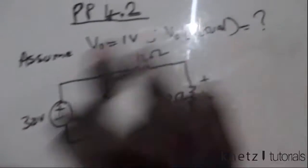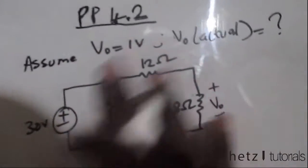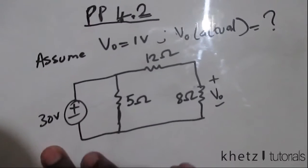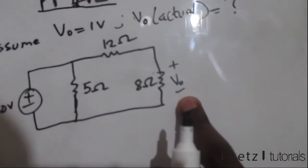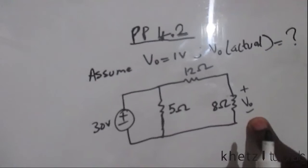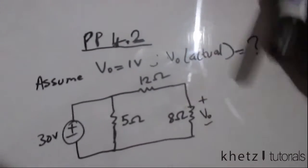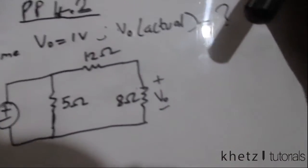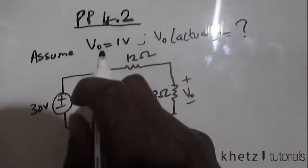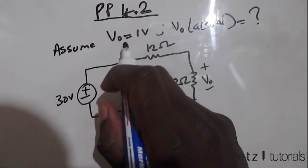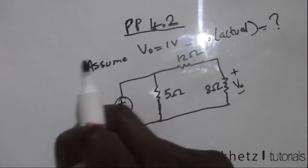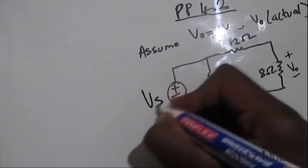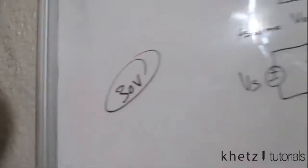In this case, this circuit would actually give us the actual value of vo, but we want to use the linearity property to find vo. Using a vo of 1 volt, we can put this 30 volts aside for now and call it vs. So we have 30 volts, that is for the actual value.